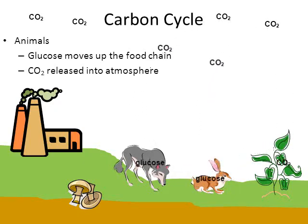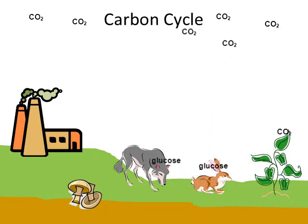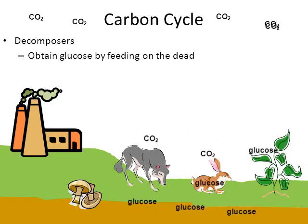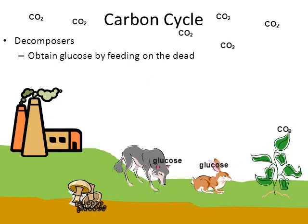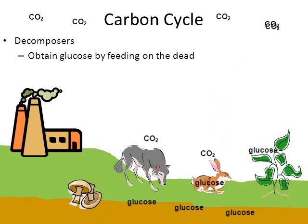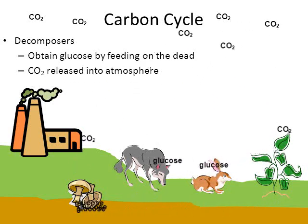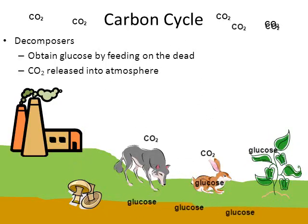Before finishing, I want to mention the role of decomposers. They obtain glucose by feeding on the dead — from a dead wolf, dead rabbit, or dead plants, going to the mushrooms which represent decomposers. Decomposers also do cellular respiration, so they too release carbon dioxide into the atmosphere. Now we have a full cycle involving autotrophs, heterotrophs, and decomposers.